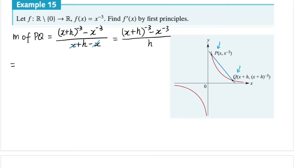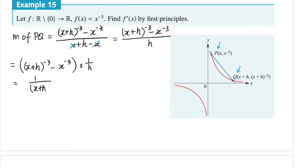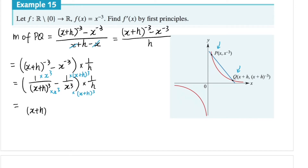So it's all over h. This fraction can be written as the numerator — x plus h to the power of negative three minus x to the power of negative three — divided by h. Dividing by h means multiplying by one over h. We rewrite using fractions: x plus h to the power of negative three becomes one over (x plus h) cubed, and x to the power of negative three becomes one over x cubed. To subtract these fractions we need a common denominator, so we multiply x cubed to the first fraction and (x plus h) cubed to the second fraction.